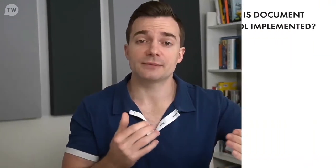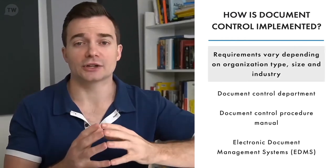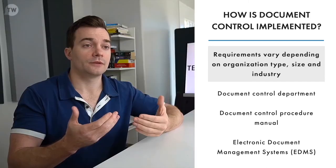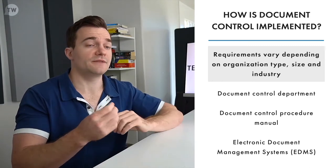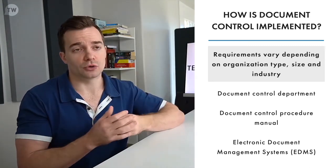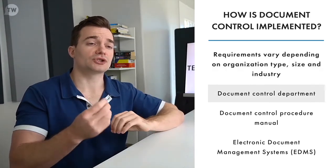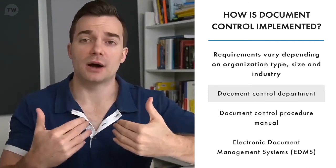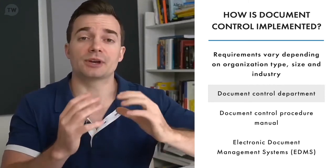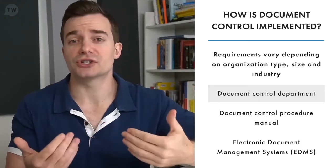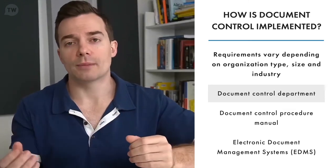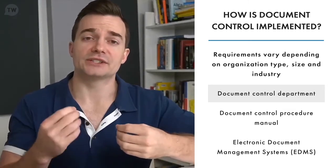The document control system implemented by a company depends on multiple factors, including legal and regulatory requirements and the industry the company operates in. For small businesses, a small team or even an individual can manage all document control requirements. For larger businesses, a document control department is often required. A document control manager, with the help of their team and input from management, develops document control systems comprised of processes and procedures that clearly define document workflows, naming conventions, formatting, security protocols, and version control details.